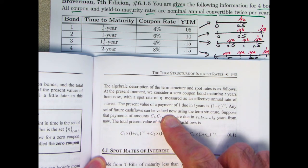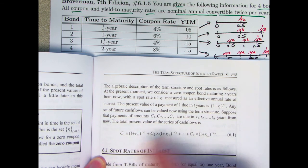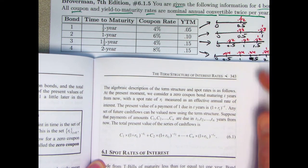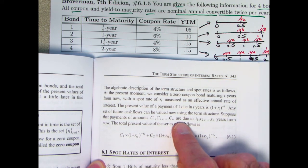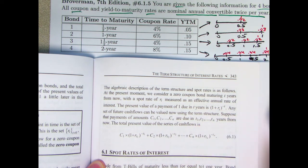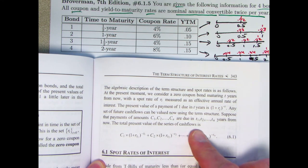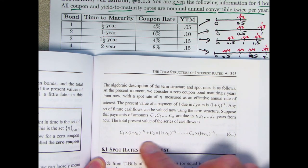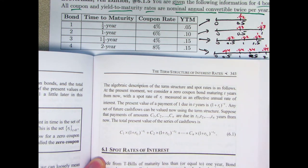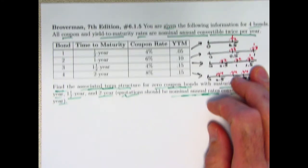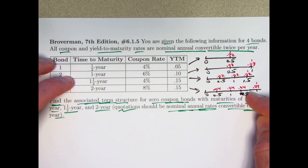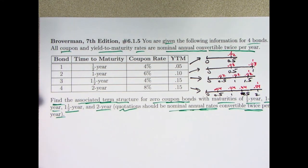Any set of future cash flows can now be valued using this term structure. Suppose you've got payments C1 through Cn, just like we have here with the coupons and the redemption value, due at different numbers of years — 0.5, 1, 1.5, and 2 for us. The total present value of the cash flows is given by the term structure formula. What we want is for the series of cash flows valued with respect to the term structure to equal the present value we get from the yield to maturities for these individual bonds.